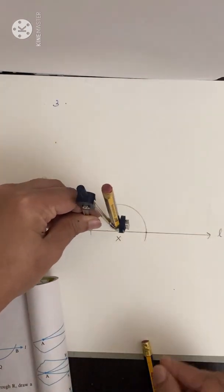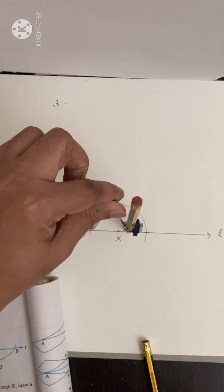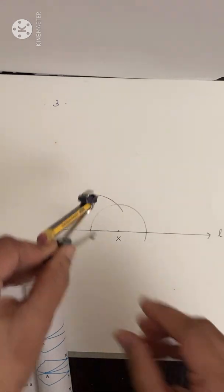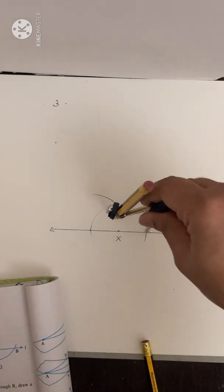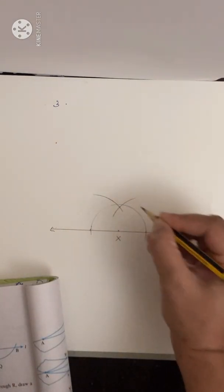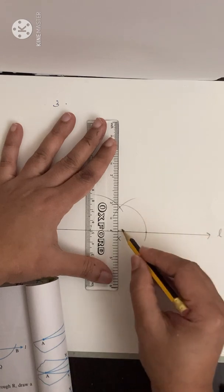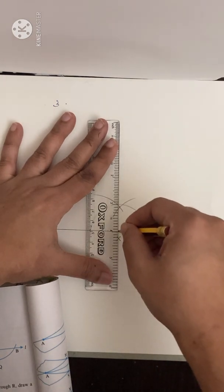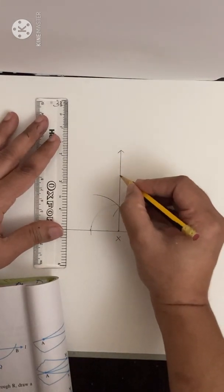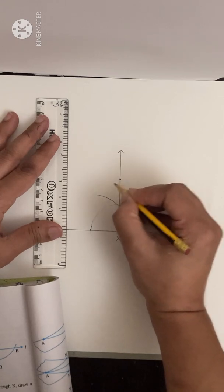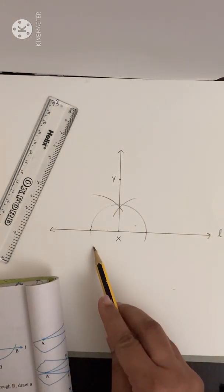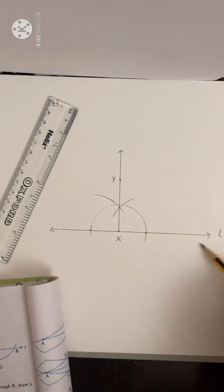From the first intersection point, take a radius greater than the distance to X and draw an arc. From the other intersection point, draw another arc on the same side. Join X with the intersecting point of the two arcs and label it Y. So XY is perpendicular to line L.